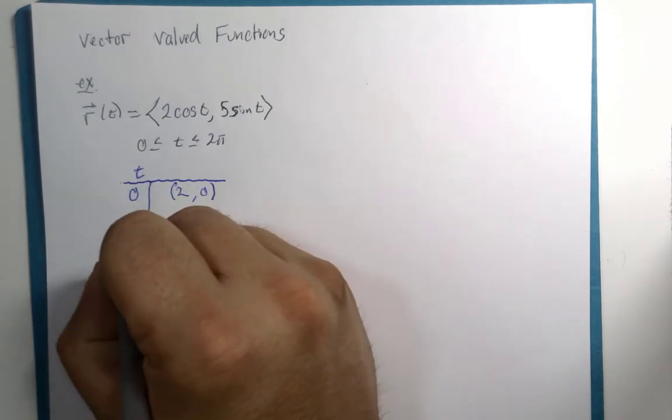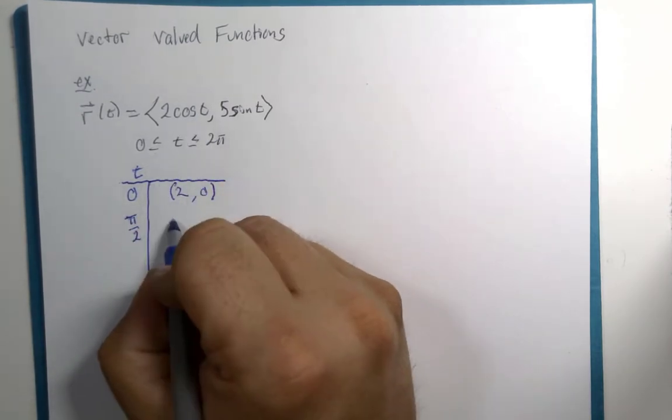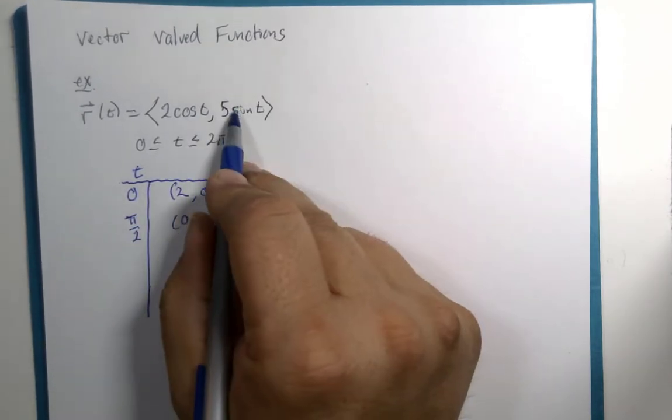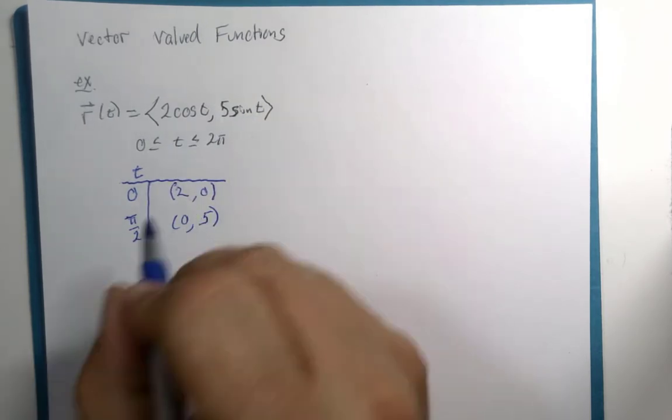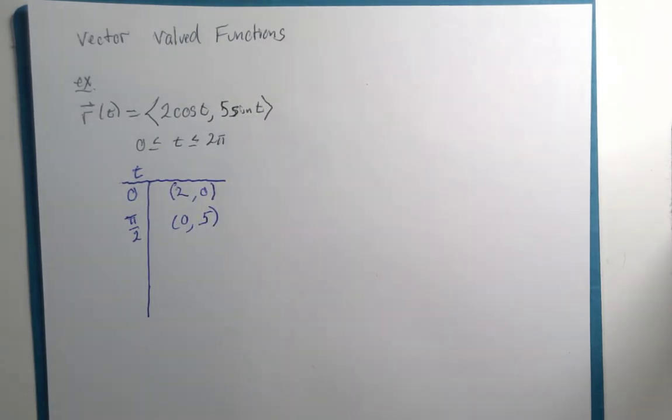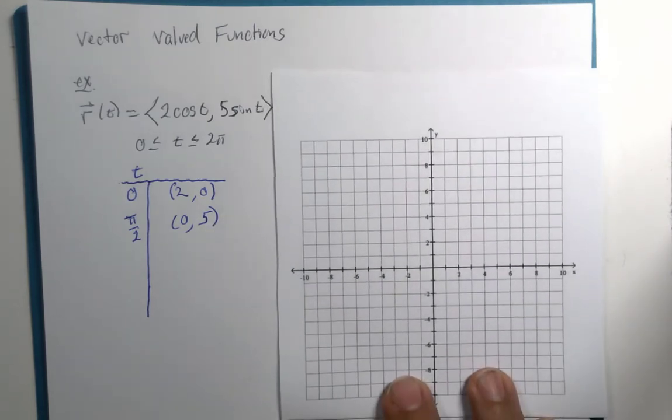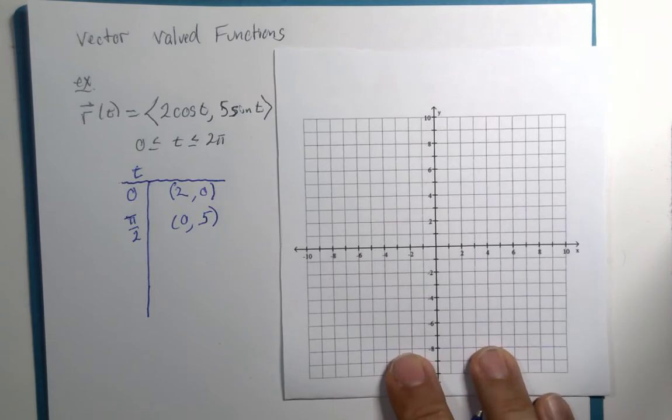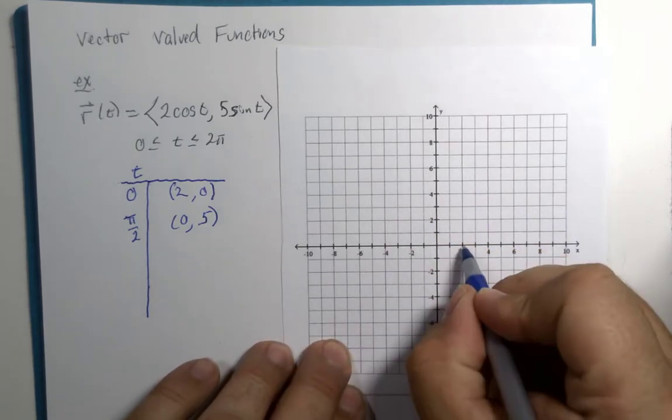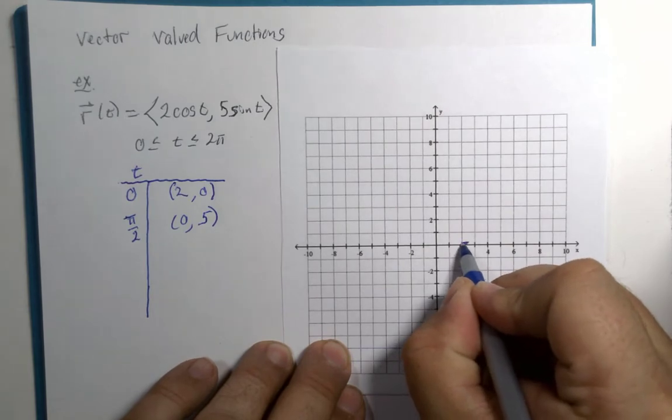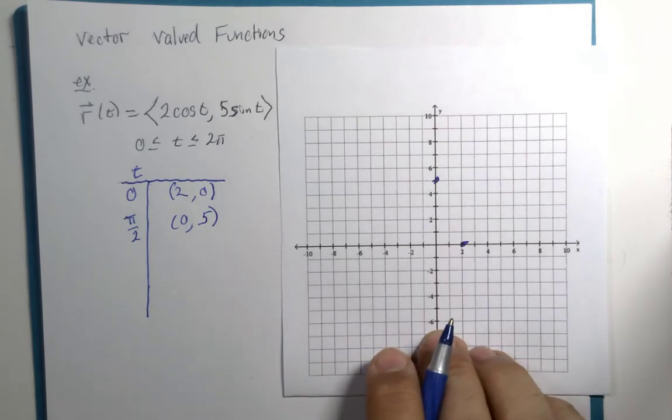If T is pi divided by 2, then the cosine would be 0, sine of pi over 2 is 1, 1 times 5 is 5. Now, I'm going to bring in my graph paper. Look, I made some improvements. Maybe you can even see it now. Now, 2, 0 and 0, 5. Alright.